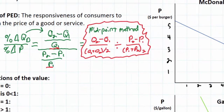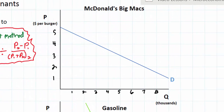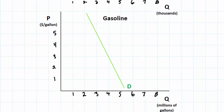Let's get over to our examples and practice calculating PED for Big Macs and gasoline. It's very important to note that you cannot look at a demand curve and determine PED for the whole curve. In order to calculate PED you must look at how quantity changes in response to a particular change in price. In both markets I'm going to start with a price of three dollars and then change the price to see what happens.